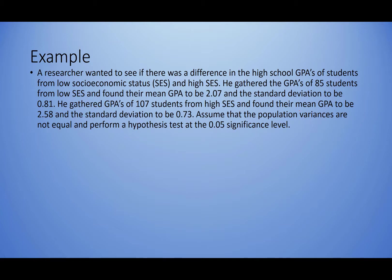First, we decide what type of test to do. We are comparing high school GPAs, so we are comparing two means. These would be independent samples because there is no indication that the students sampled are related. Also, in order to have dependent samples, the sample sizes must be equal — and here we had 85 students from low SES and 107 from high SES, so it would not even be possible to pair them one to one. That is another hint that this is an independent sample.